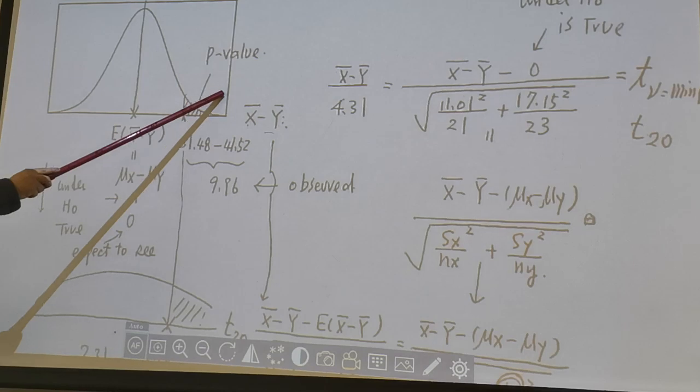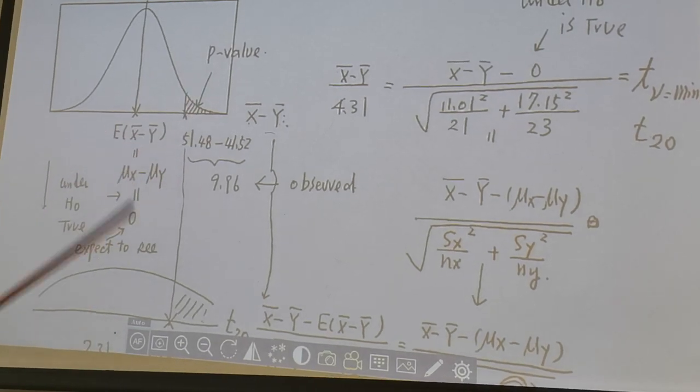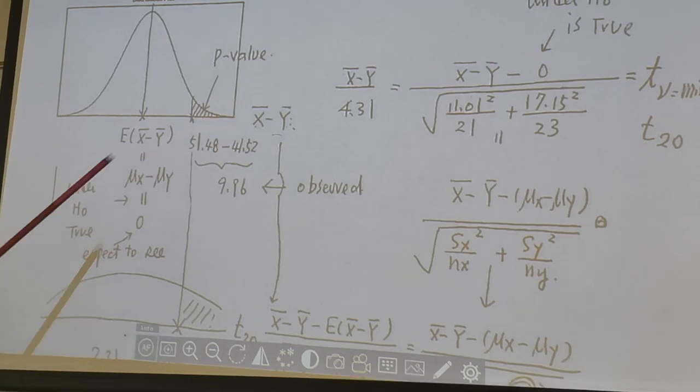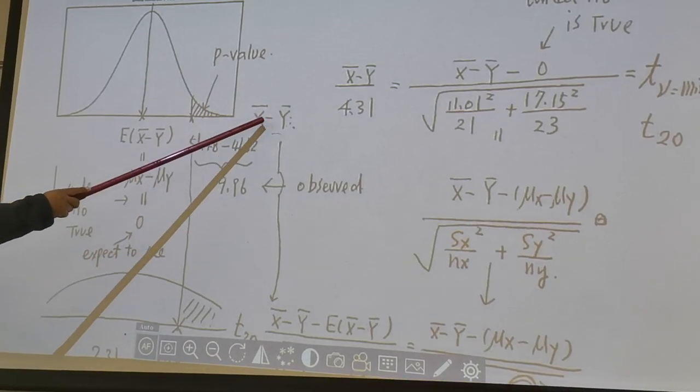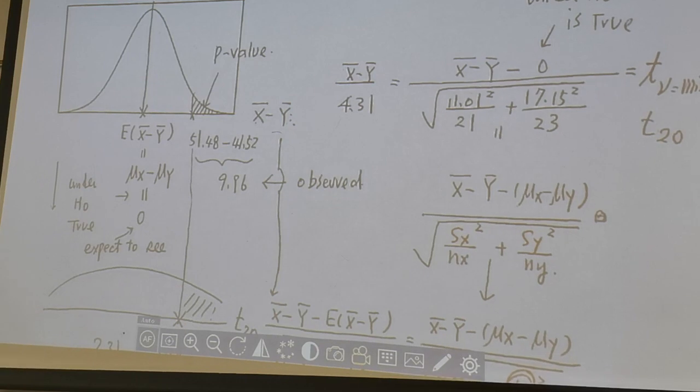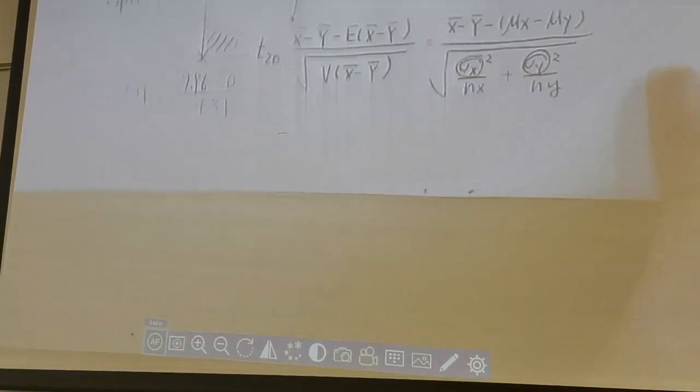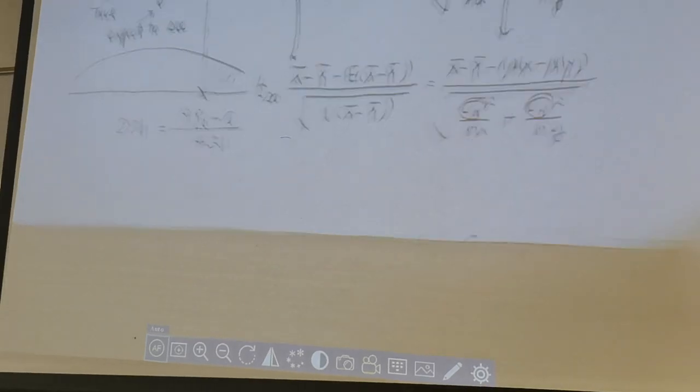So this upper tail is the p-value. And how can we find the size of the upper tail? Well, just like before, we need to standardize x-bar minus y-bar. And how can we do that?